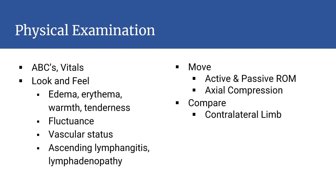As always, a physical exam should start with ABCs. Vital signs should be taken and any fever noted. Then examine the entire upper extremity in a systematic fashion. Signs indicative of infection are many, including the traditional swelling, erythema, warmth, and pain. Fluctuance may indicate an underlying abscess.